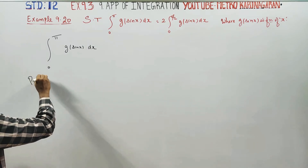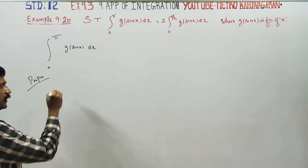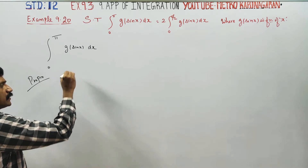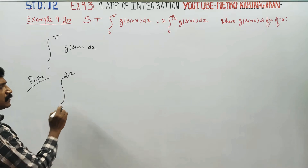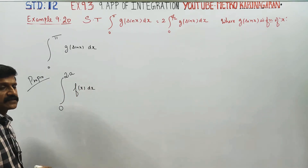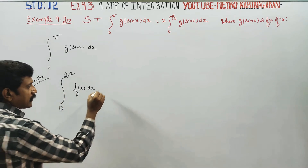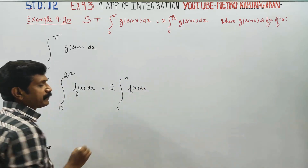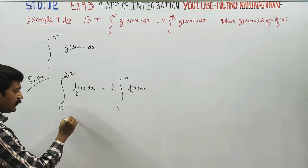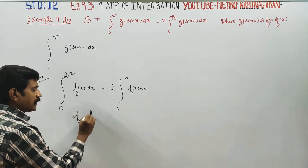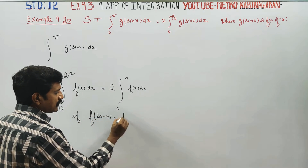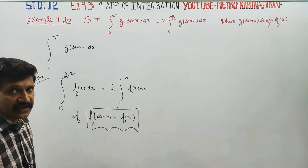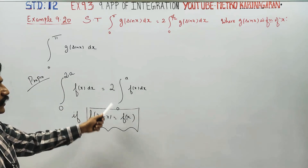Property number 10 will come into play here. The formula from property 10 states: integral from 0 to 2a of f(x) dx is equal to 2 times the integral from 0 to a of f(x) dx.